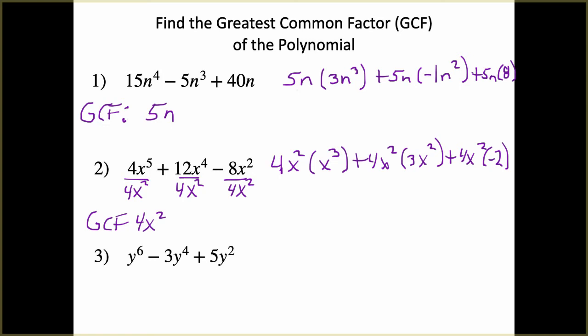If we're told to factor this — take out the GCF and factor — we would have our 4x² that's common to all three terms, and then inside parentheses we'd have x³ + 3x² − 2. That is our factored form. If you're told to factor, you would write the full expression; if you're just told to find the GCF, the answer is 4x².